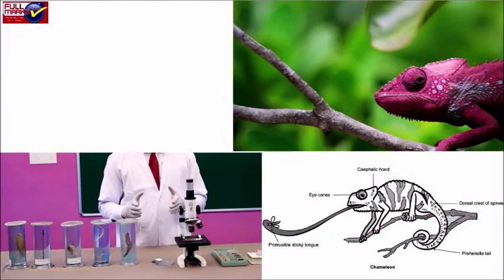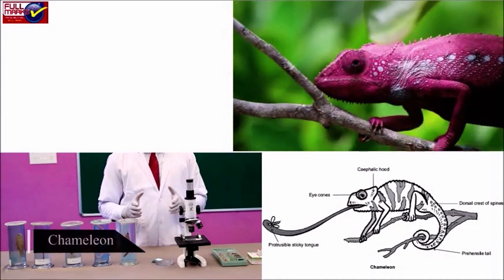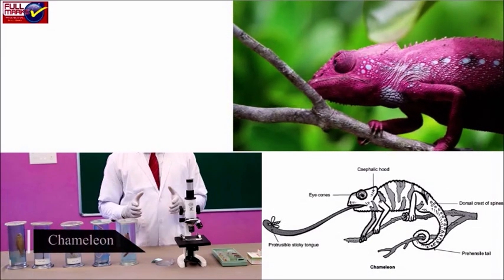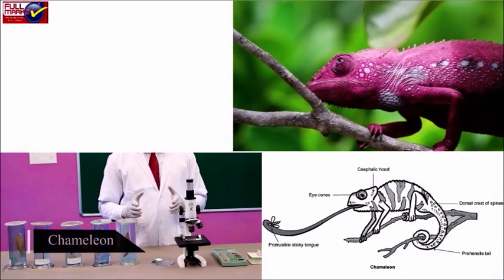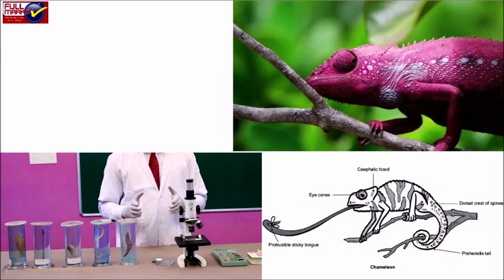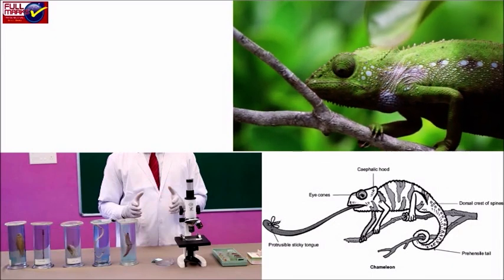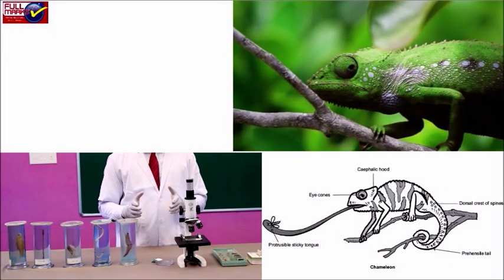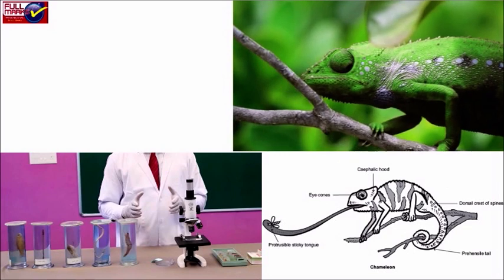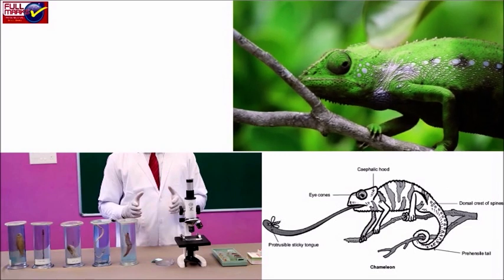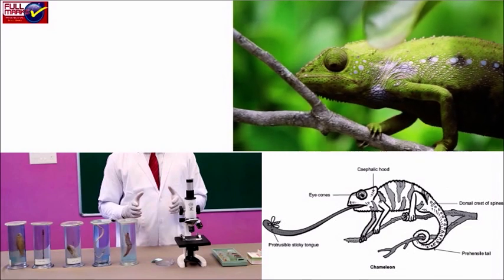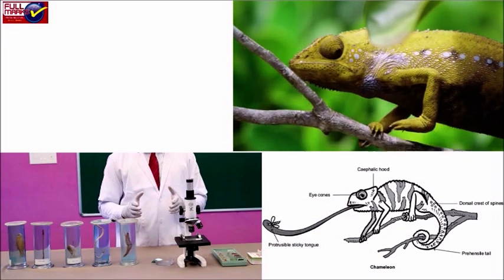Chameleon: It is a common desert lizard that feeds on insects. The tongue is projectile to catch prey. It is uricotelic. Its body is covered with scales and it can change its color to match its surroundings.